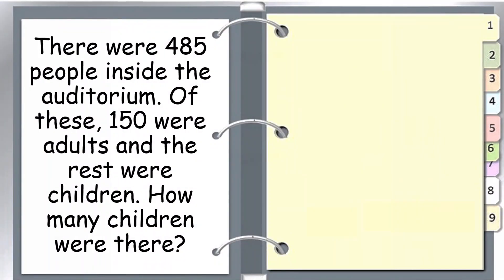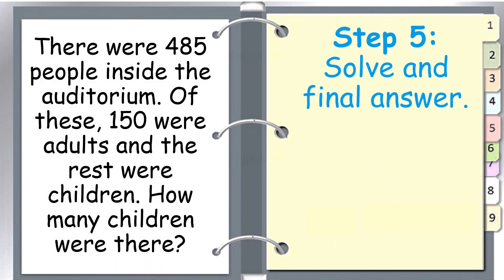And for the last step we will solve. Always remember to add the ones place first, tens then hundreds. So we have 5 minus 0 is 5.